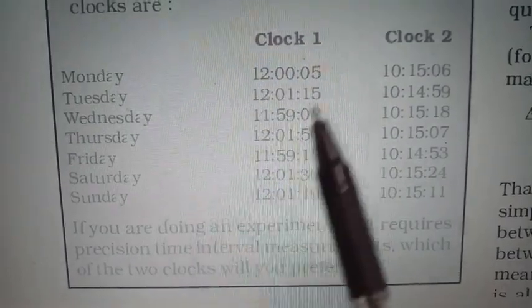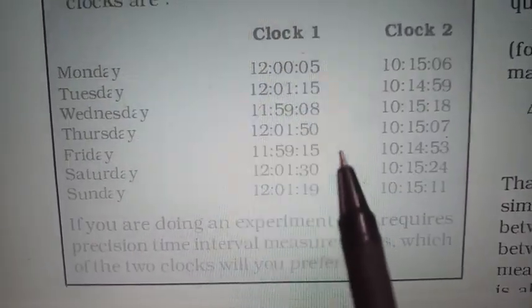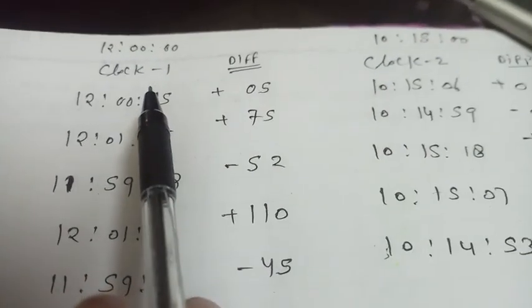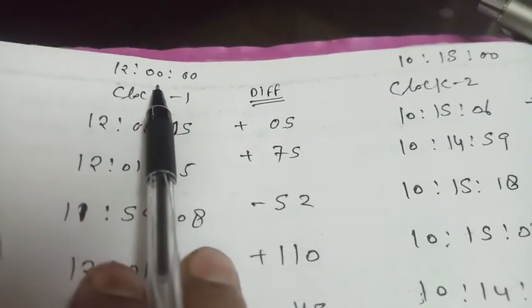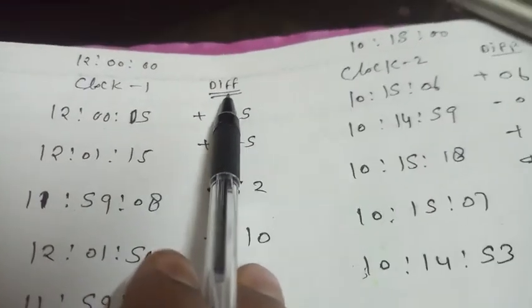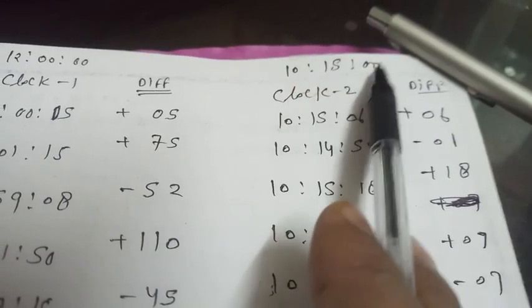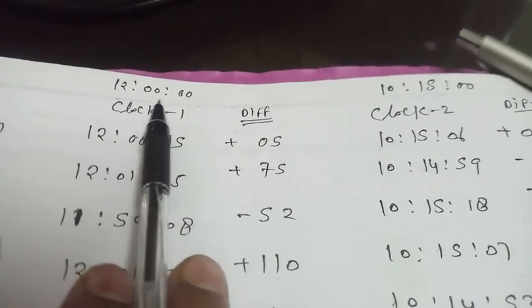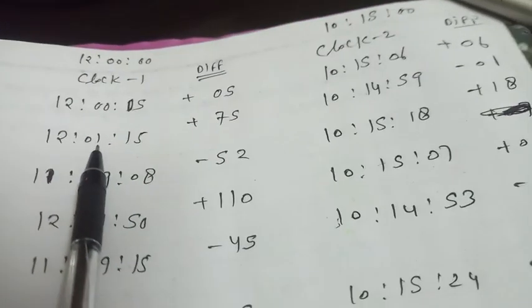We will find positive and negative errors in this case, then calculate which one is perfect for us. These are two clocks. For Clock 1, the reading at 12:00 noon, the standard time, shows various differences. At 10:14, it's 10:15 minutes. The standard time is 12:00.